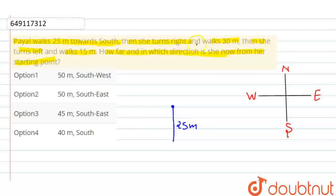Then she turns right and walks 30m. We will take right turn. Right turn means west direction. How will we travel? 30m. That means this is 30m. Then she turns left and walks 15m. Again, we will travel 15m downward.